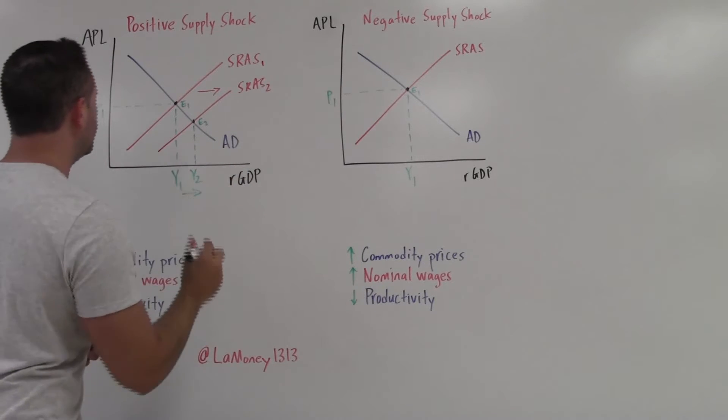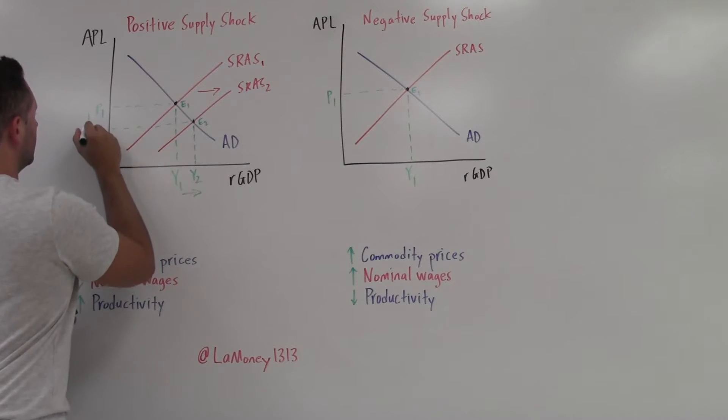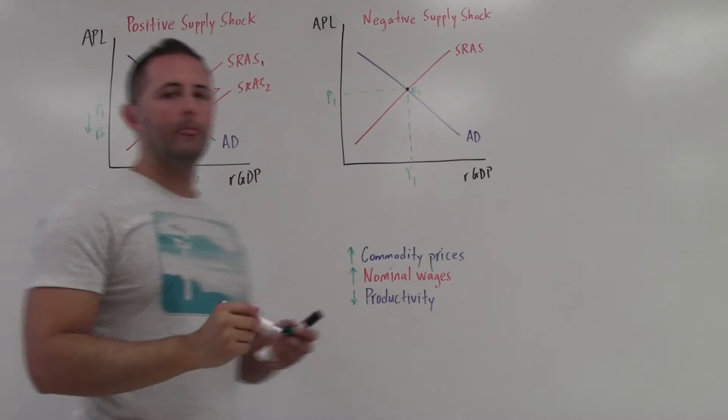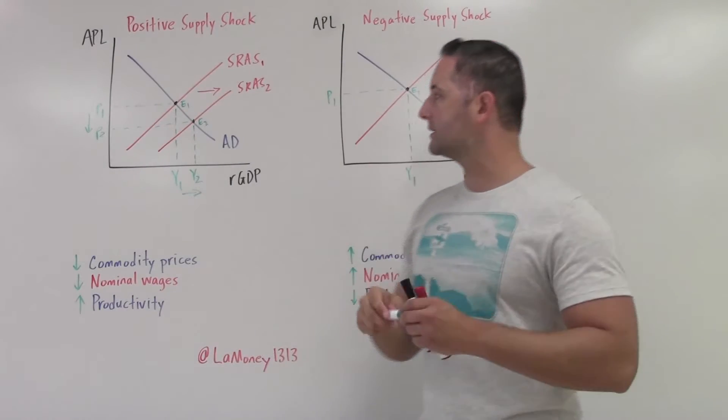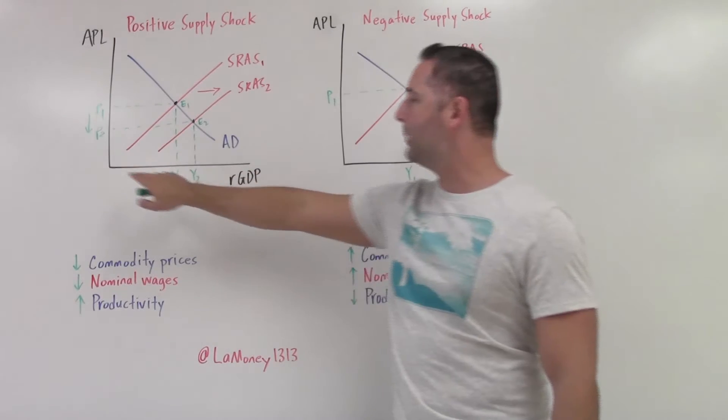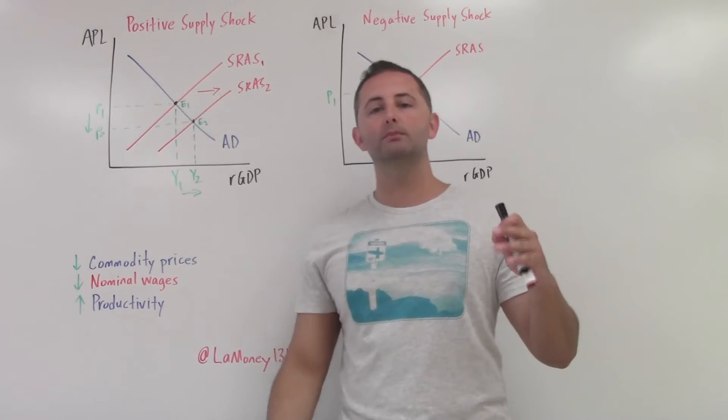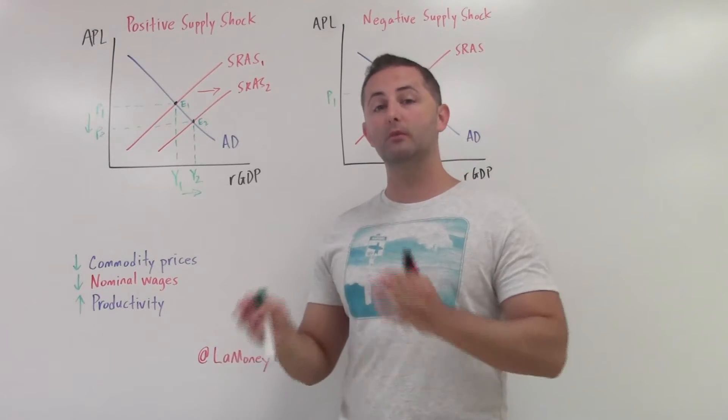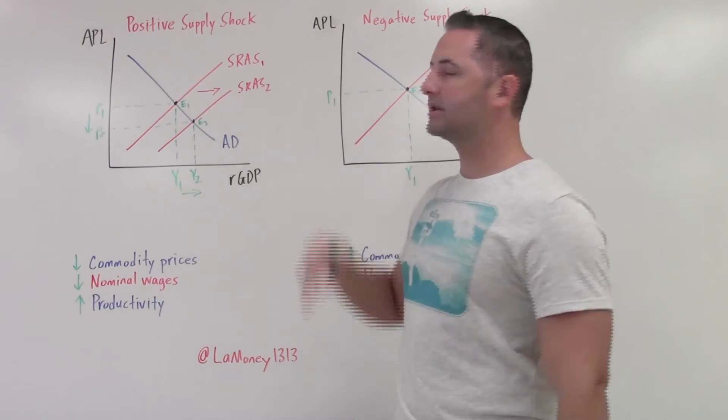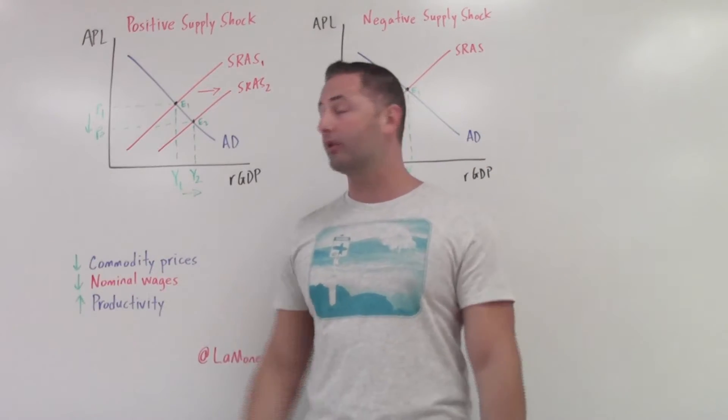So we see that output has increased with this positive supply shock. And here's the key part, price level has decreased. So the positive supply shock, we have lower price level, but higher output. So unlike a demand shock, which will cause both price level and output to move together in the same direction, supply shocks do not do that. They cause price level to go one way, output to go the other way.